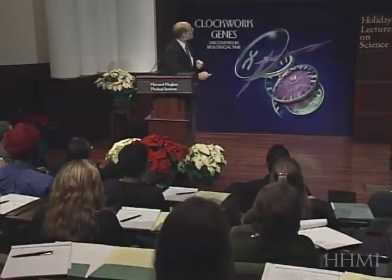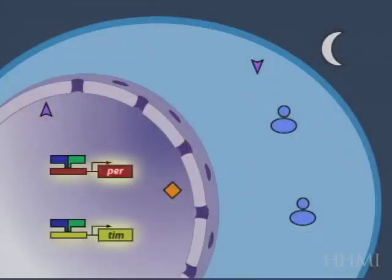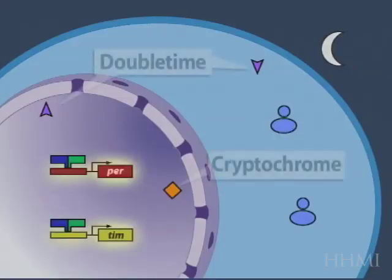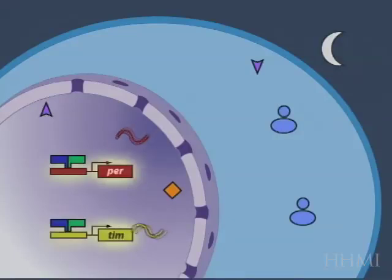And so, I have, I think, next an animation, which now illustrates the contribution of both double-time and cryptochrome to this cycle, which we're building in a more and more complex fashion. So, here's the double-time kinase, which puts phosphates on the period protein, and here's the cryptochrome, the light-harvesting protein.